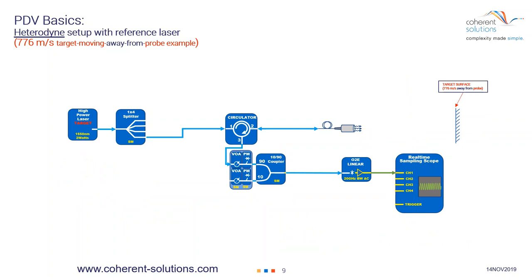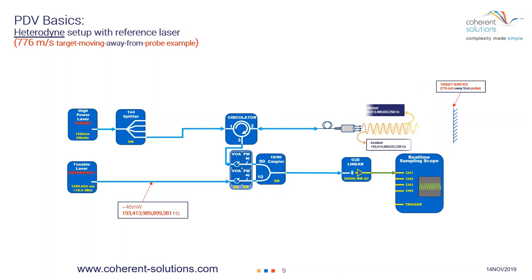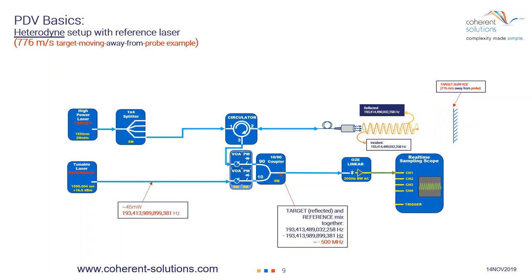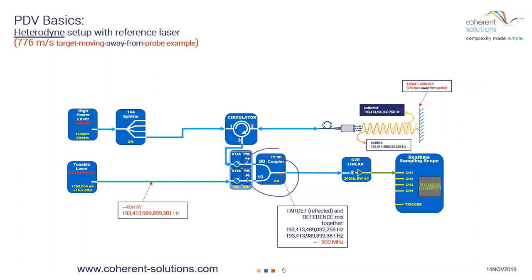Let's take a look at that same heterodyne setup except the target will be moving away from the probe. We start with the reference laser intentionally offset by 500 megahertz from the target. The target is moving away at 776 meters per second, creating a 1 gigahertz Doppler shift — same magnitude as the previous slide, except because it's moving in the opposite direction, the Doppler shift will be in the opposite direction for the target laser. When it comes back and mixes with the reference laser, starting from 500 megahertz, as the velocity moves up to 776 meters per second, it will pass through zero.